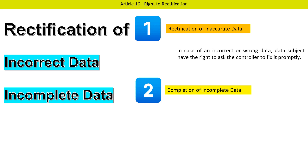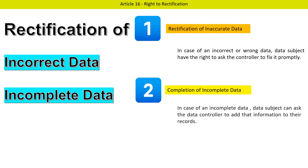In the case of incorrect or wrong data, the data subject has the right to ask the controller to fix it promptly. In the case of incomplete data, the data subject can ask the data controller to add that information to their records.